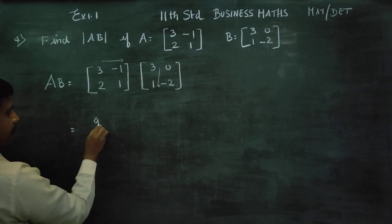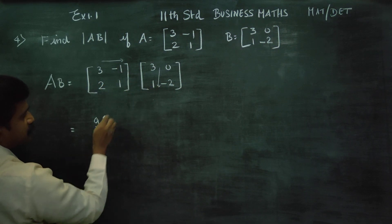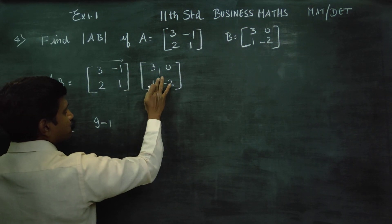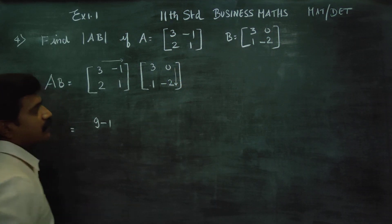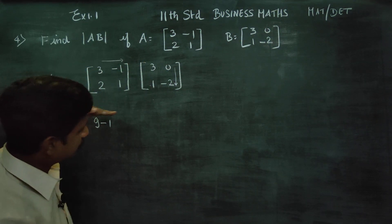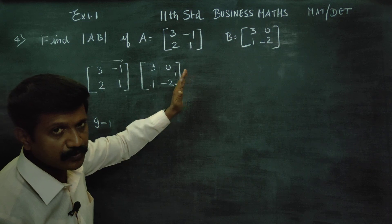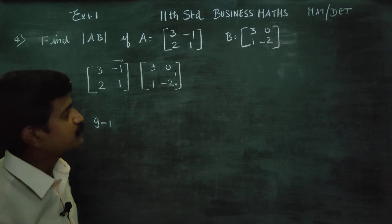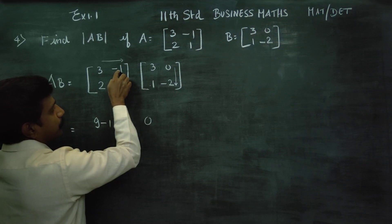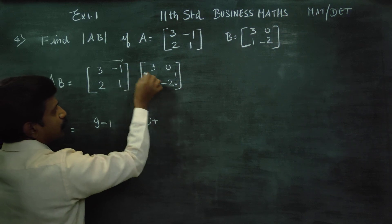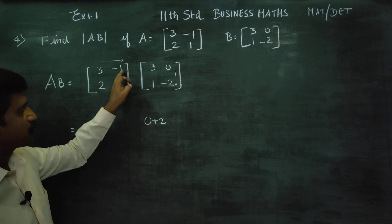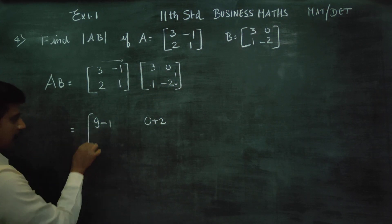3 threes are 9. Plus — minus into plus — minus 1 ones are 1. Row column multiply: 3 threes are 9. Second row, second column. 3 into 0 is 0. Minus into minus is plus, 1 twos are 2.